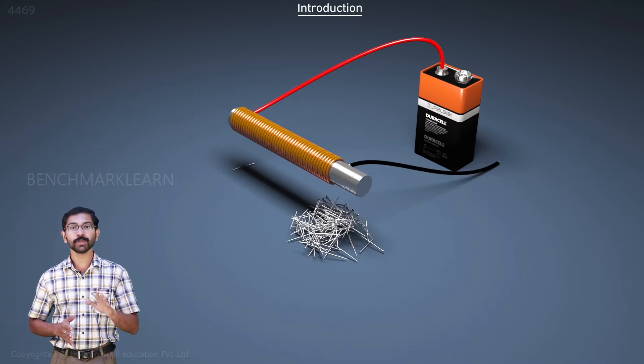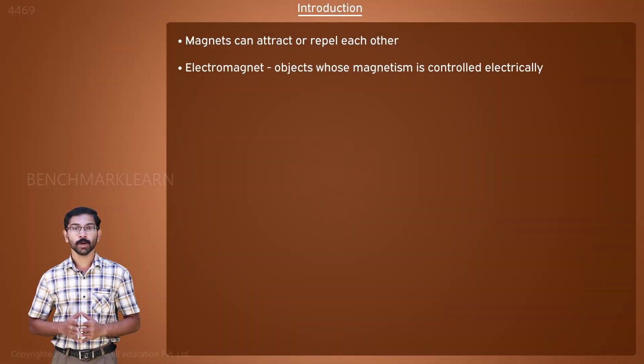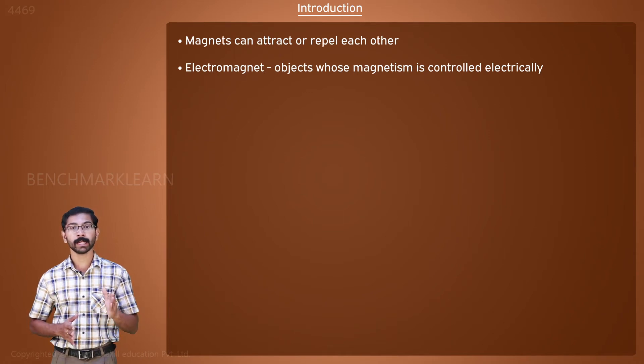But when we switch off the current, the iron piece will lose the magnetic behavior. Such an object, whose magnetism is controlled electrically, is called an electromagnet. They are very useful and are used in electric motors.